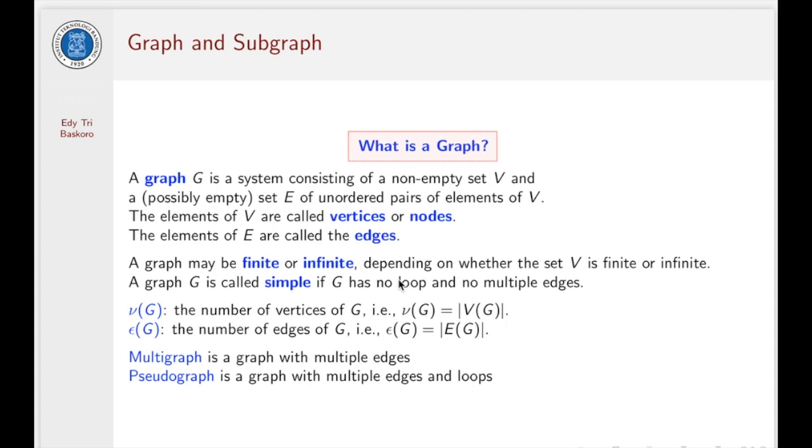Now, let us go through the formal definition of a graph. A graph G is a system consisting of non-empty set V and a possibly empty set E of unordered pairs of element of V. The element of V will be called vertices or nodes of the graph. And then the elements of E will be called the edges of the graph. If V is finite, then G we call a finite graph. Otherwise, G is infinite graph. A graph G is called simple if G has no loops and no multiple edges.